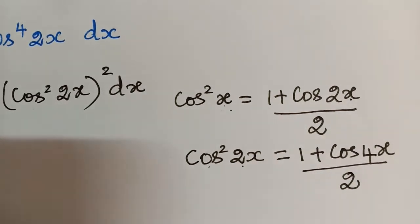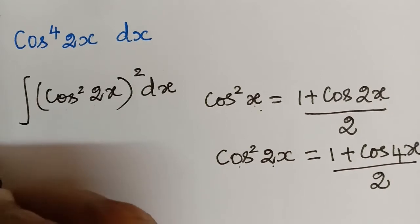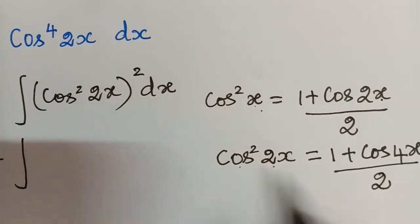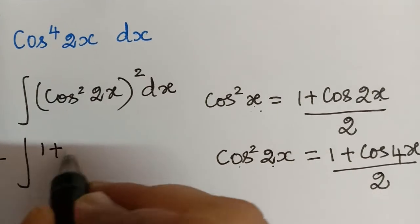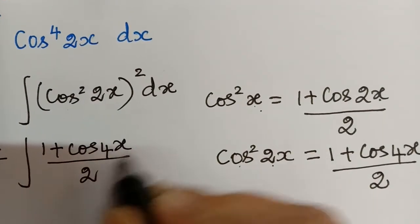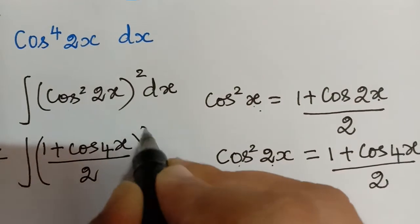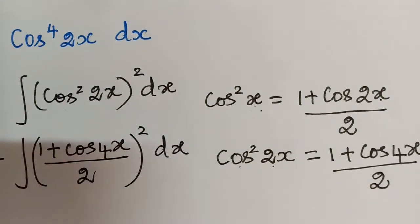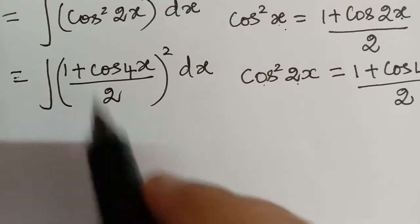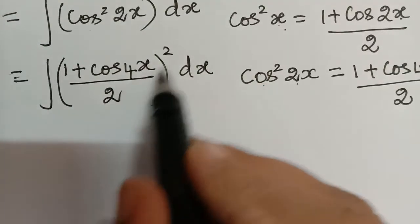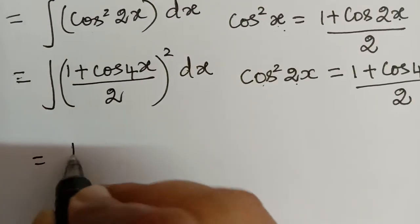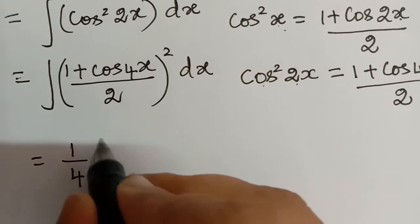We shall substitute this into the integral. So the integral becomes the integral of (1 + cos4x) / 2, the whole squared, dx. Taking the 2 in the denominator out — it has a square so it becomes 2 squared — that gives us (1/4) times the integral.